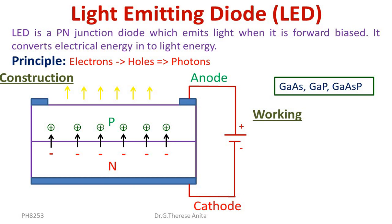The emitted light depends upon the material. Gallium arsenide emits infrared radiation, while gallium phosphate emits red or green light.